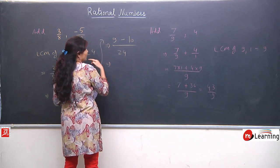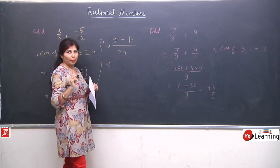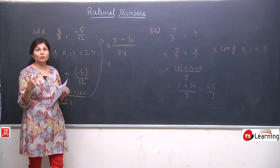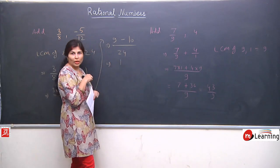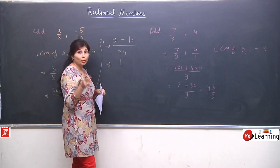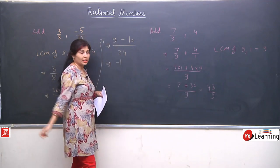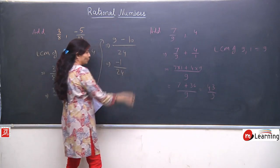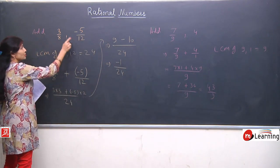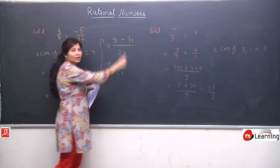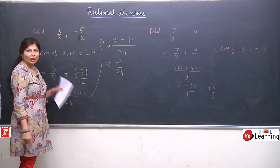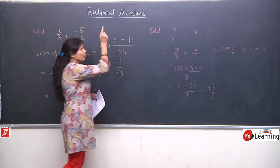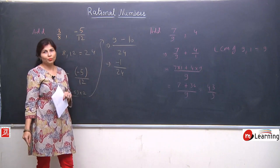Now 9 has no sign so it is positive, and the other is minus. Plus minus is minus — the operation is subtraction: 10 minus 9 is 1. The greater number is 10, which has a minus sign, so the answer is minus 1 upon 24. The question asked us to add, but indirectly we ended up subtracting because two signs appeared, and when we opened the bracket, plus minus became minus.